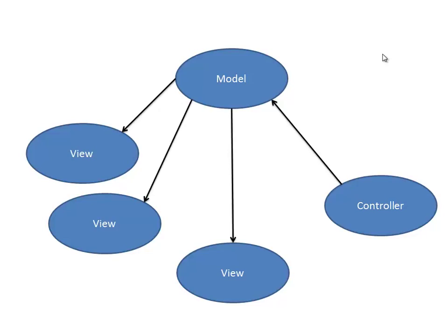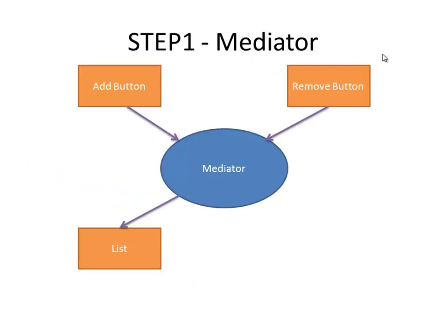Usually you'll just lump the view and controller together and call them a user interface — how I present to the user and how I respond to the user interaction. This diagram is meant to show that you can have any number of views and any number of controllers on that same model. You can add and remove views at will and it doesn't hurt anything.